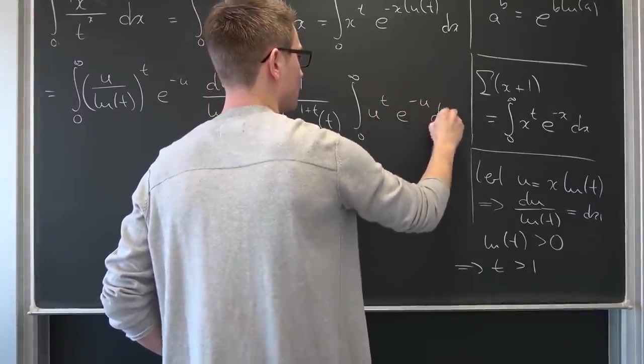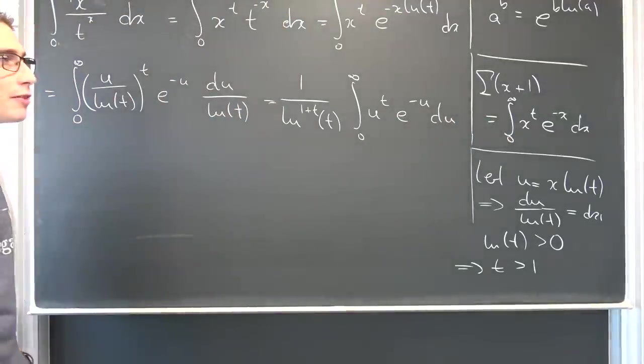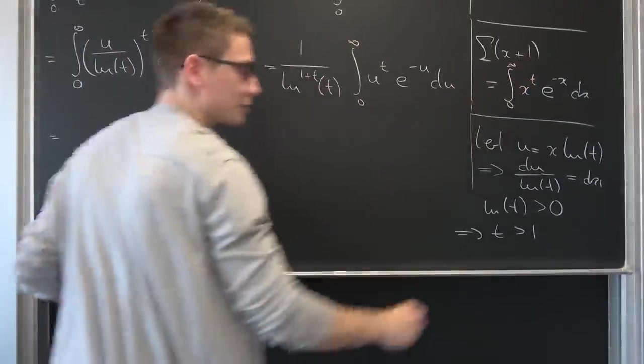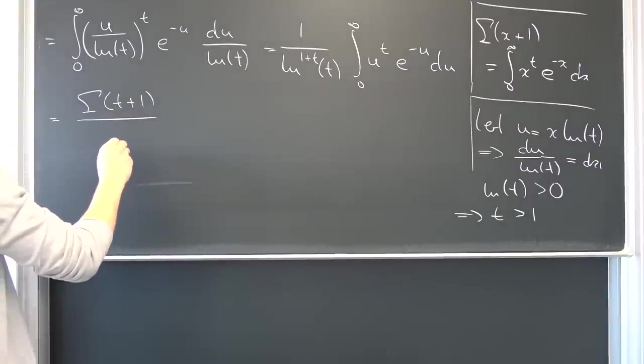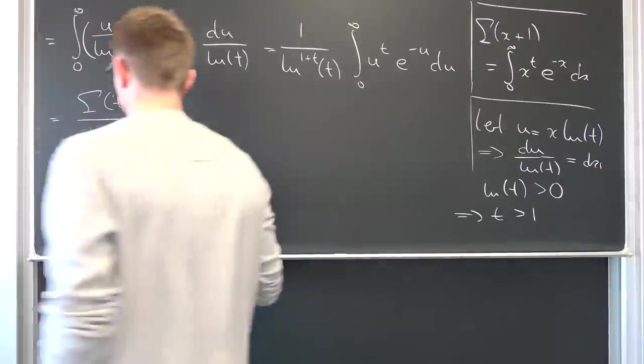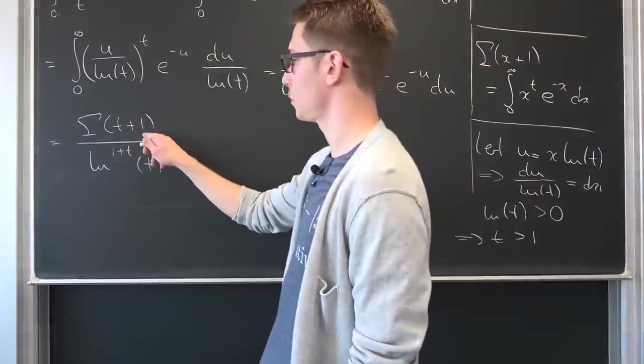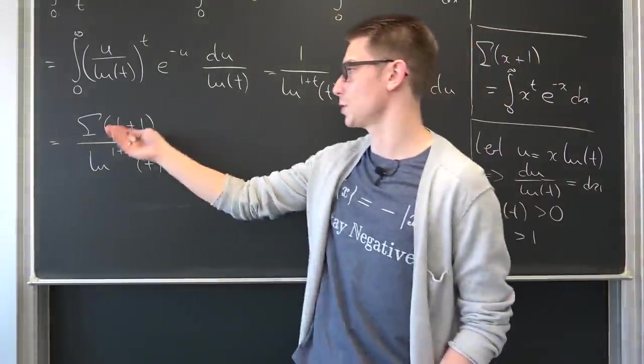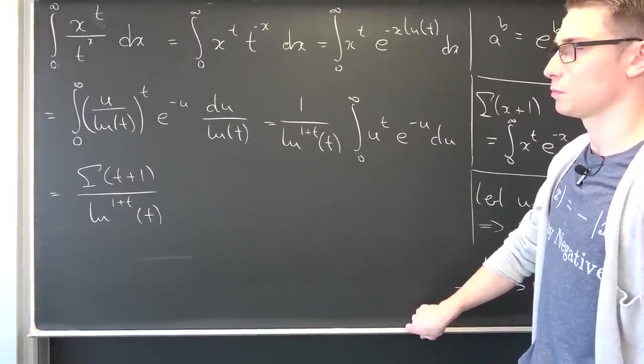Then we are done. This thing right here, if you just compare, is nothing other than our gamma function of t plus 1. I'm terribly sorry. We are going to end up with gamma function of t plus 1 over the natural log to the 1 plus t power of t. And then we are done. If you wish, you can also use the functional equation of the gamma function to turn this into t times the gamma function of t, but I think this is already good. So there are probably certain values that you can plug in that would make all of this nice.